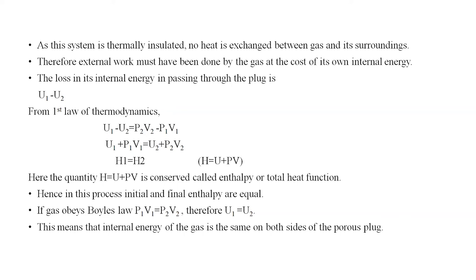By rearranging the equation, we get u1 + p1·v1 = u2 + p2·v2, which means h1 = h2, since enthalpy h = u + pv is conserved. This quantity is also called enthalpy or total heat function. Hence, the initial and final enthalpy are equal. If the gas obeys Boyle's law, then p1·v1 = p2·v2, which means the internal energy also remains the same: u1 = u2. So the internal energy of the gas is the same on both sides of the porous plug.